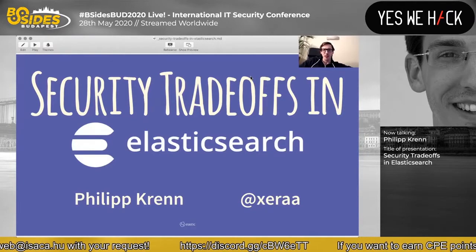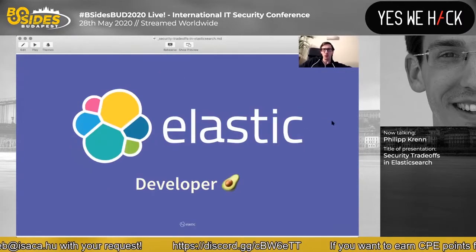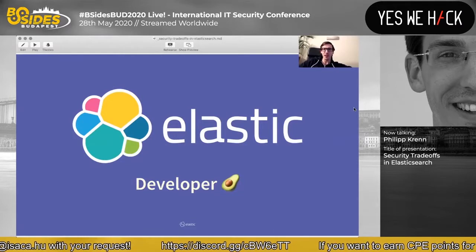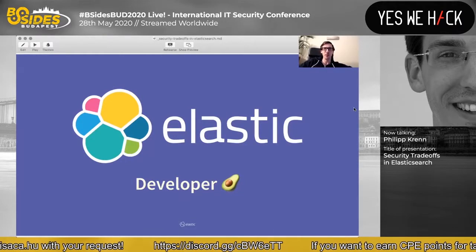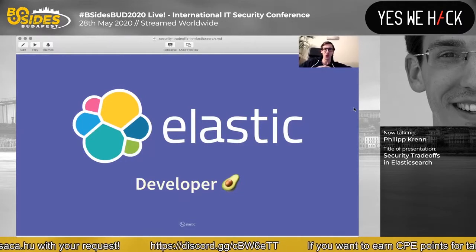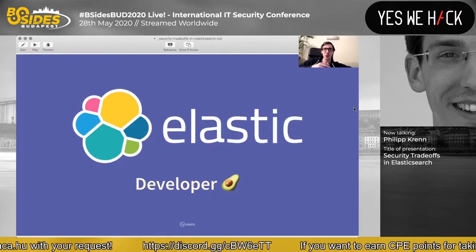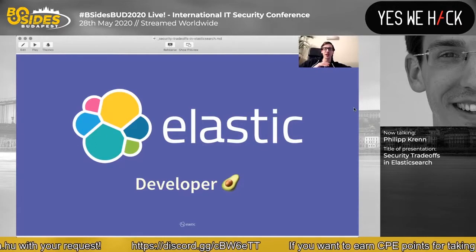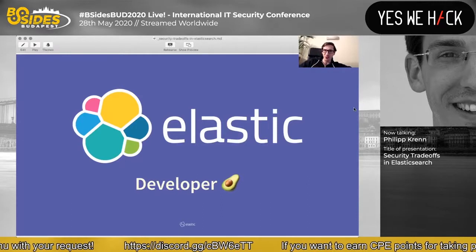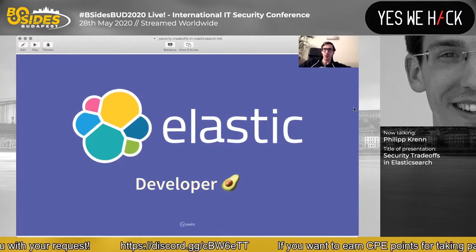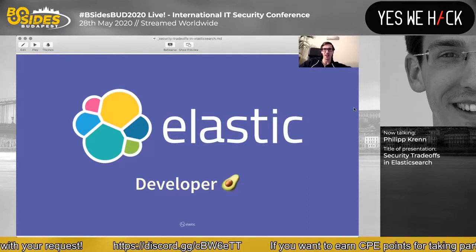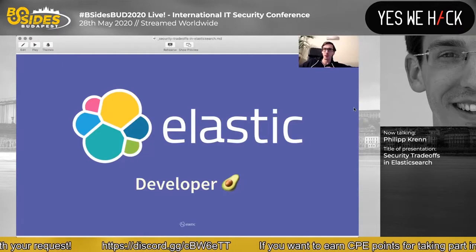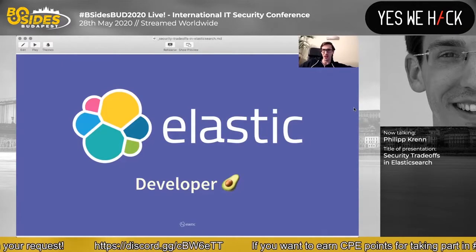Why am I picking this topic? I work for Elastic, the company behind Elasticsearch. My official title is Developer Advocate. I mostly talk about the good stuff that we do, but today I want to take the opportunity and talk about the stuff that maybe wasn't always that great, or things that we have learned over the past years. This is a bit about the story of how you can improve your own product over time.